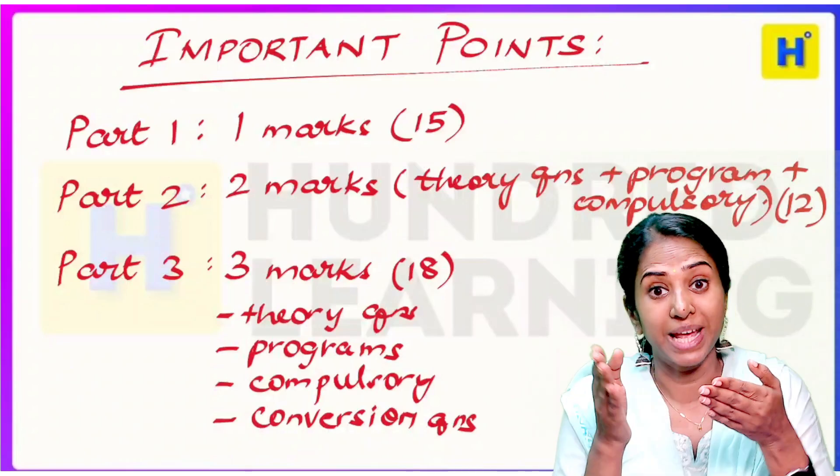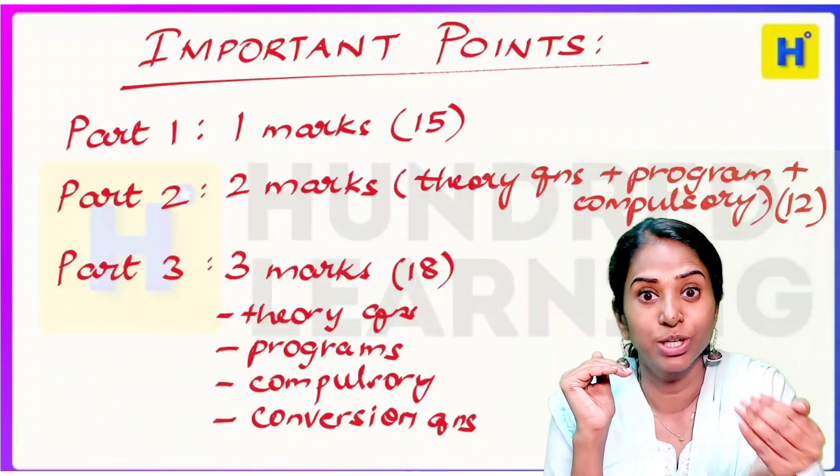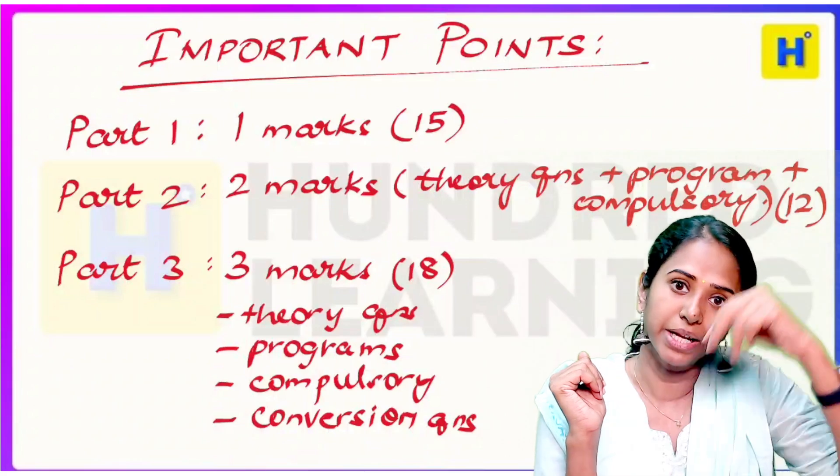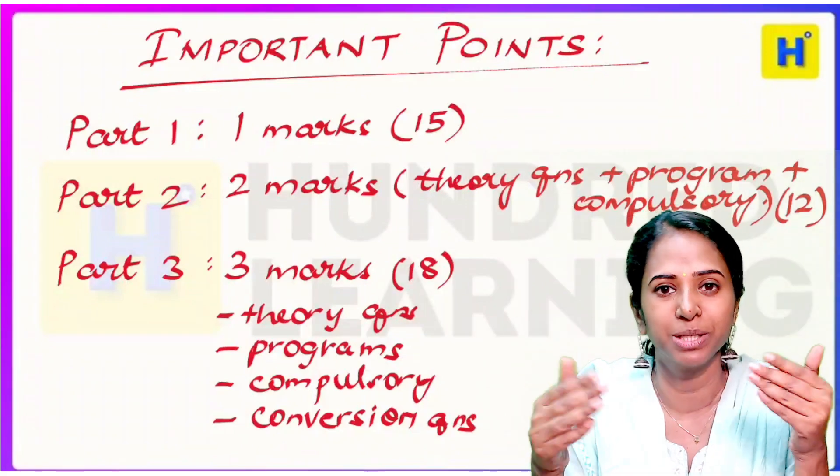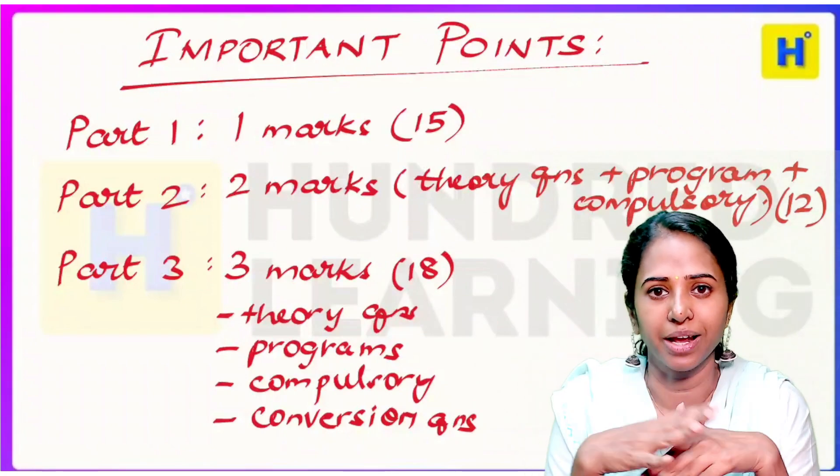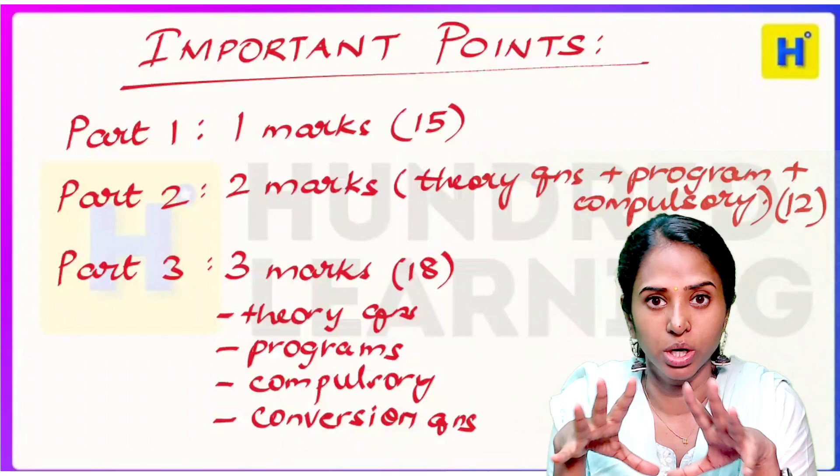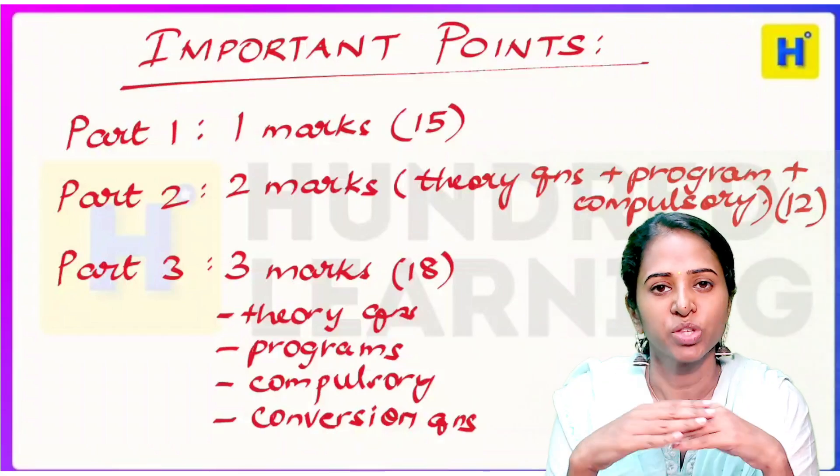For example, hexadecimal to decimal, decimal to octal, octal to binary, binary to hexa, whatever. All types of conversions. Definitely 2 or 3 marks, mostly mainly 3 marks. That is definitely a question.